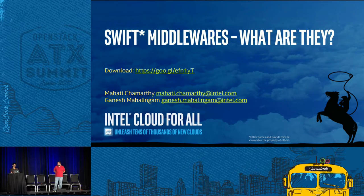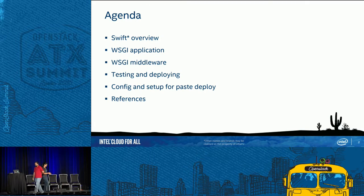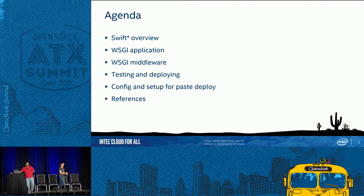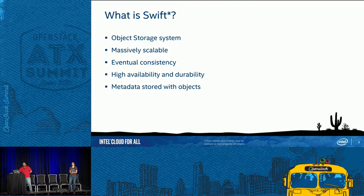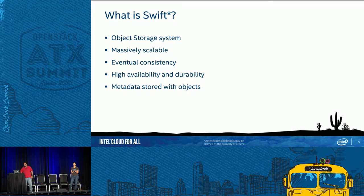Ganesh will start with the Swift overview. So let's do a quick overview of Swift. What is Swift? Swift is an object storage system in OpenStack. It was one of the first two systems enabled in OpenStack, in 2010.